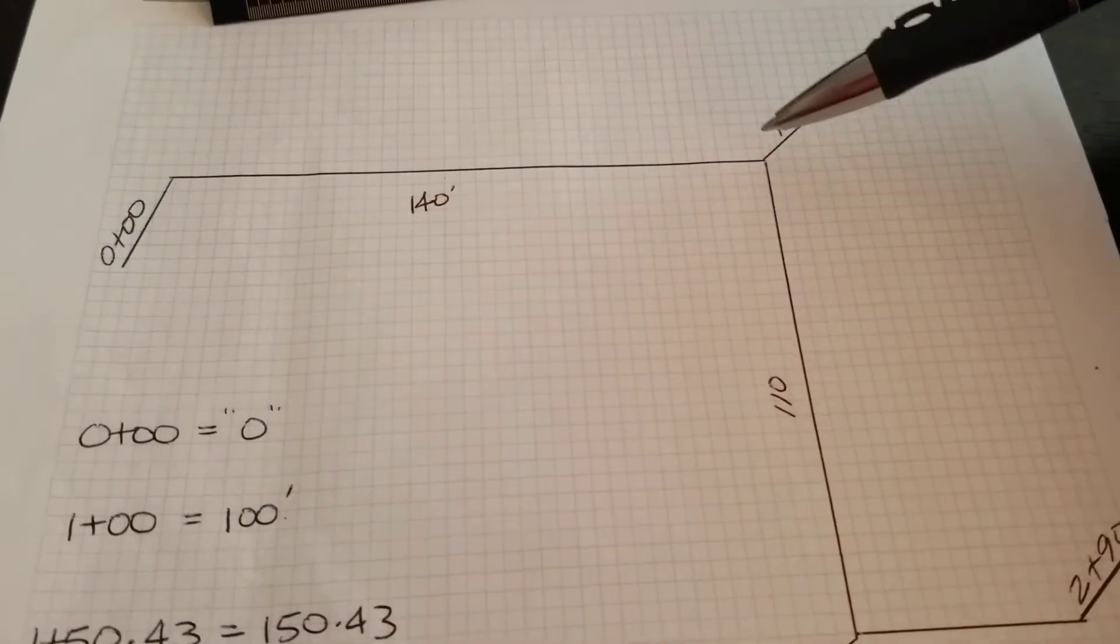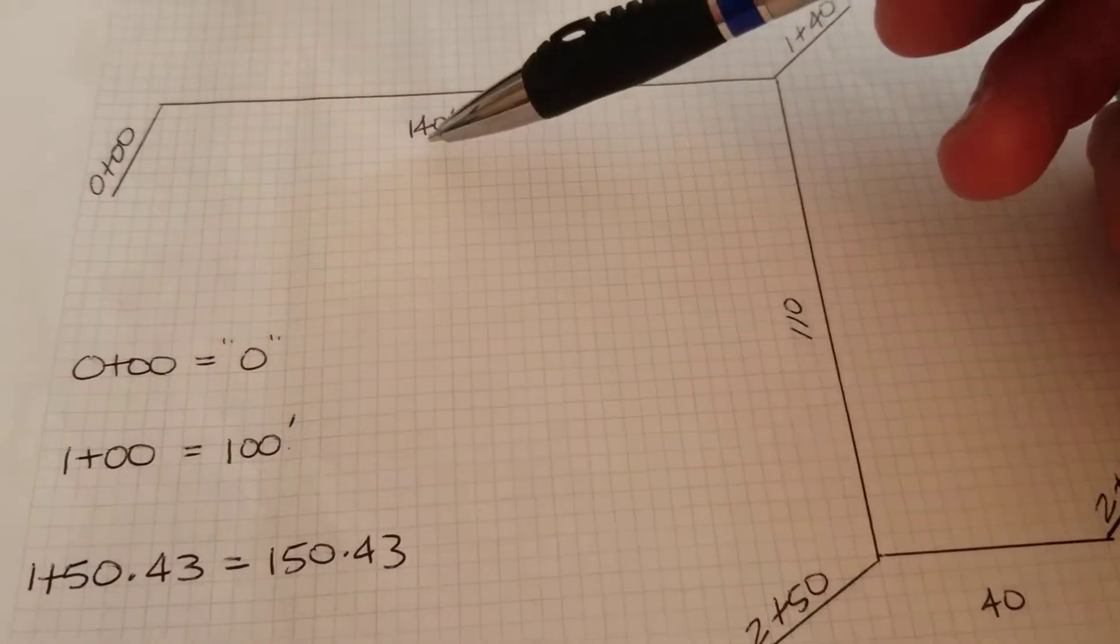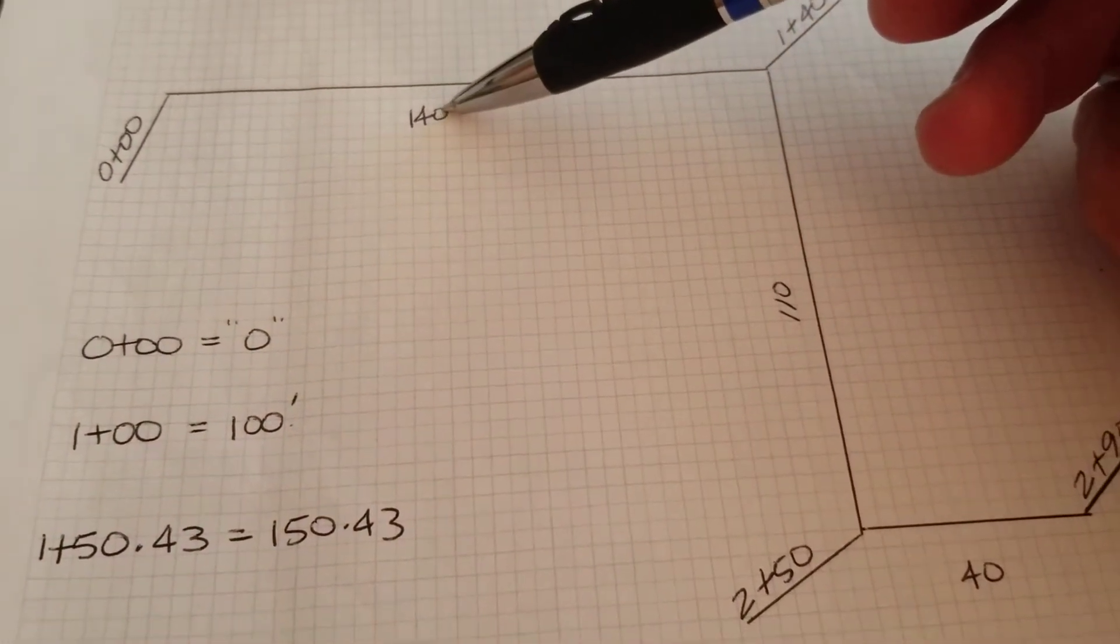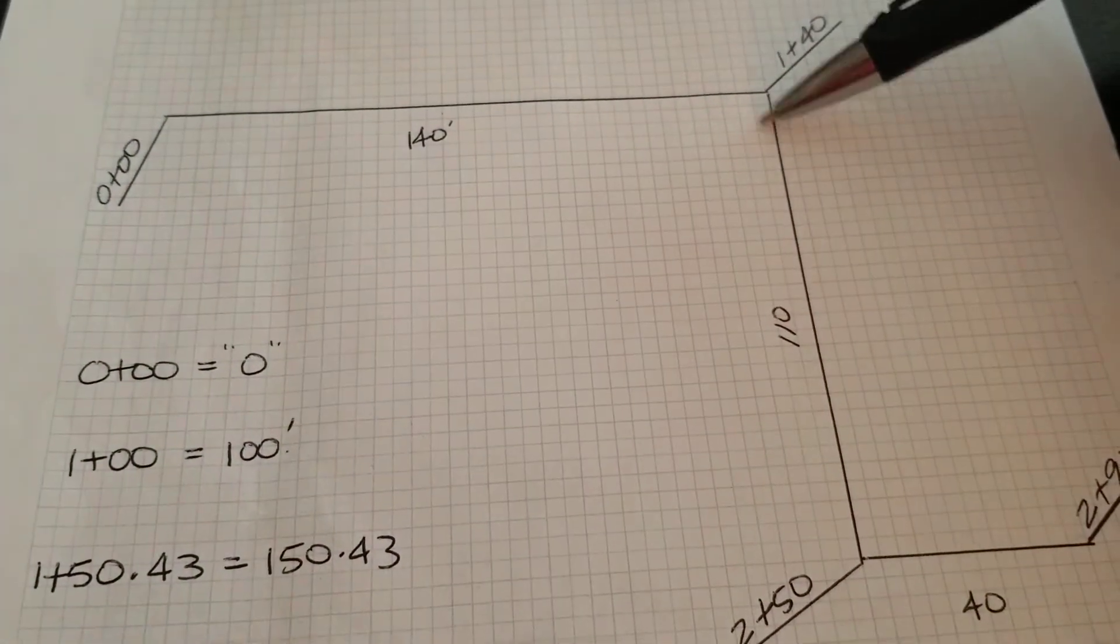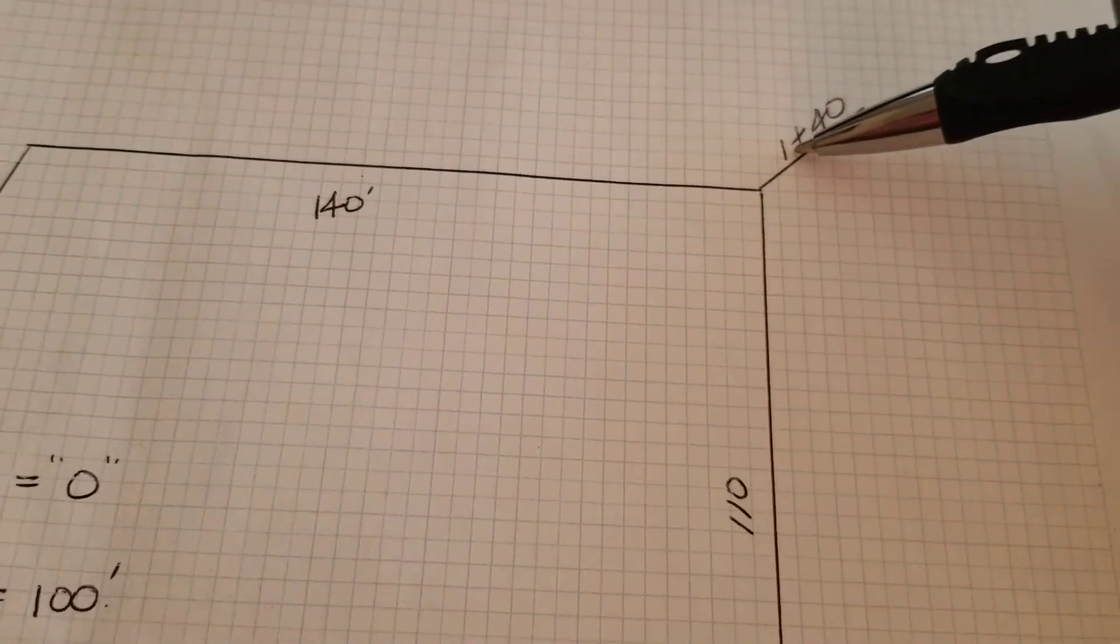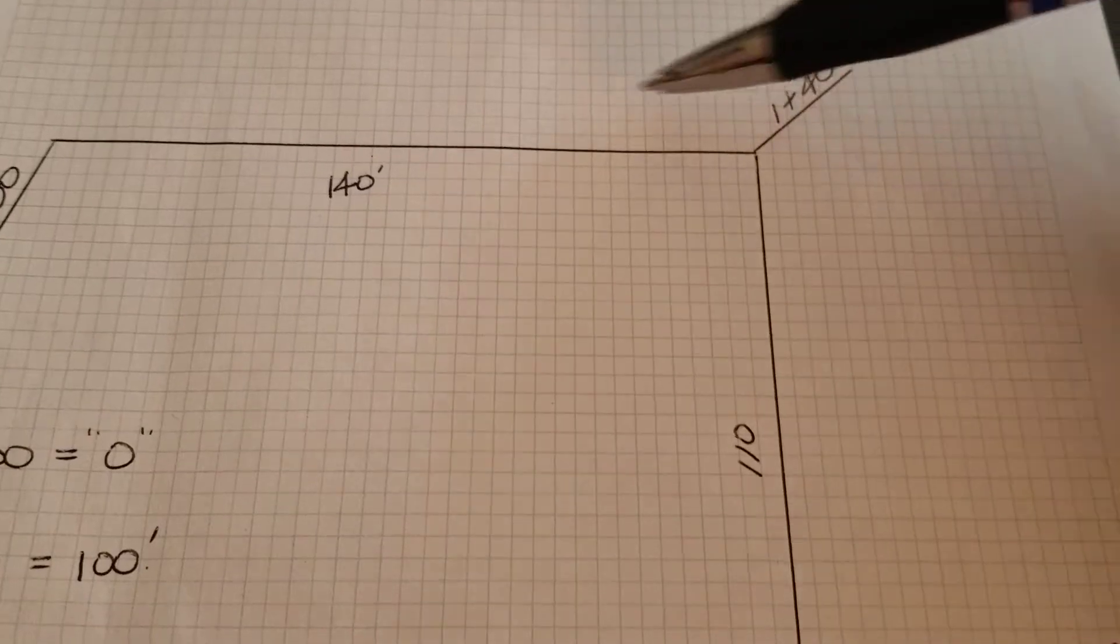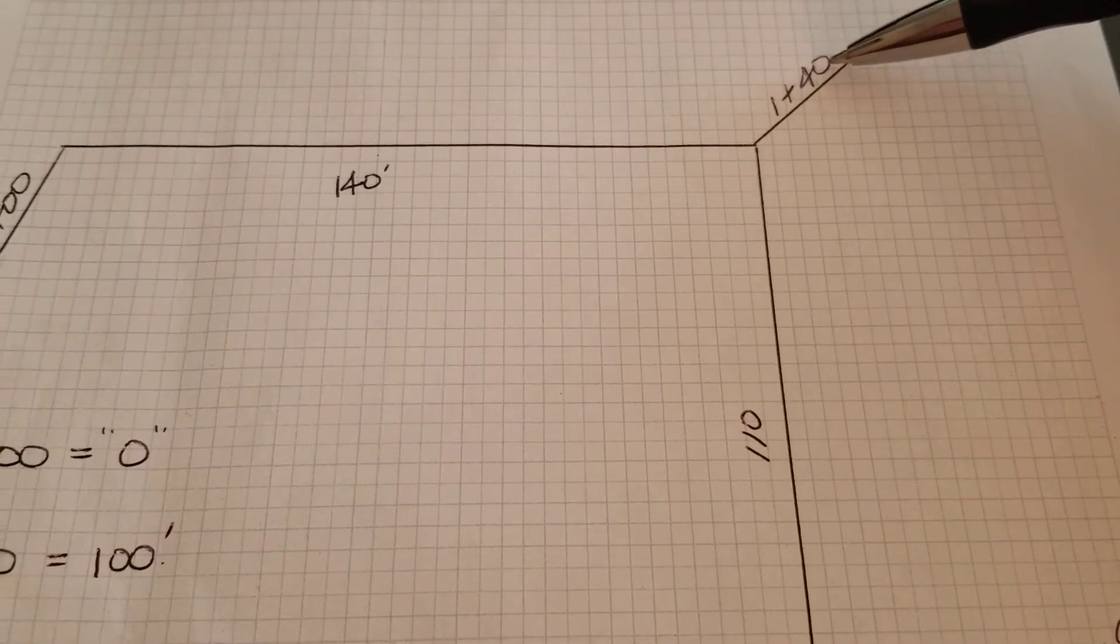And that's because the way we write 140 feet - let's say it's 140 feet from here to the angle point - 140 feet in stationing would be just 1+40. That's it. All you're doing is you're putting a plus between the hundreds of feet and the tens of feet.